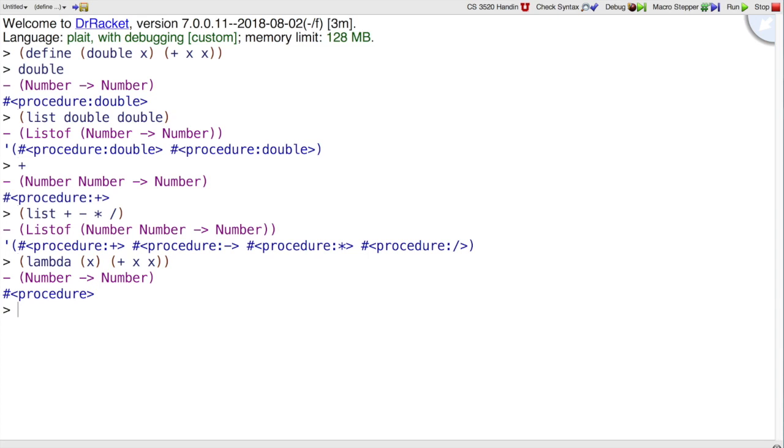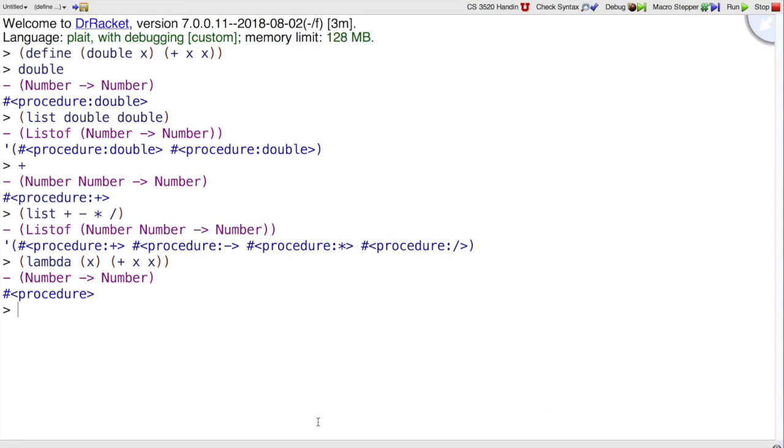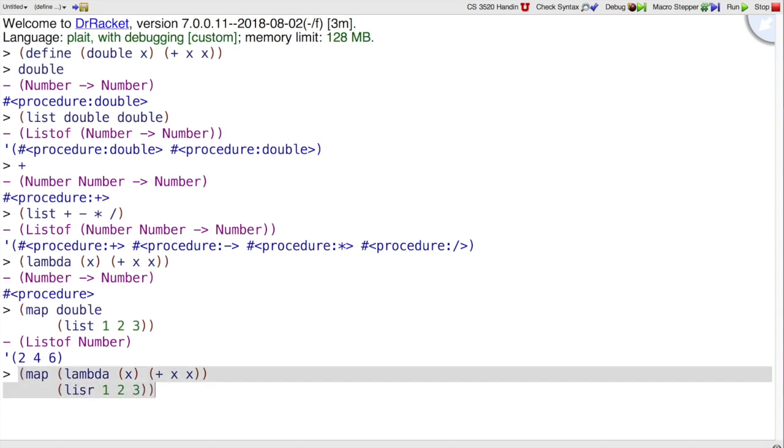Usually we don't apply lambdas directly, but what we might do is pass it to another function, like map. Map is a built-in function that wants a function to apply to every element of the list. So I could use map on double to double all of the numbers in 1, 2, 3. Or if I happen to not already have a definition of double, then I could make it up right here, and map the number, map that doubling function over the list, 1, 2, 3.